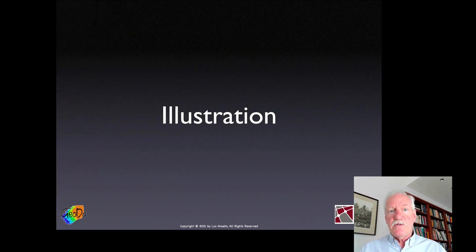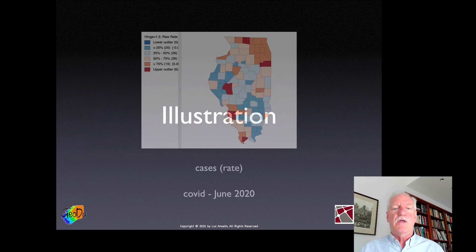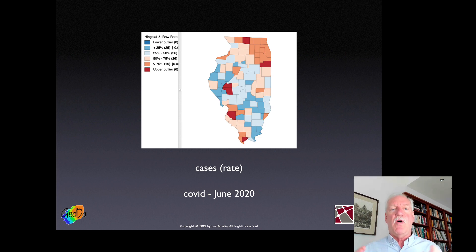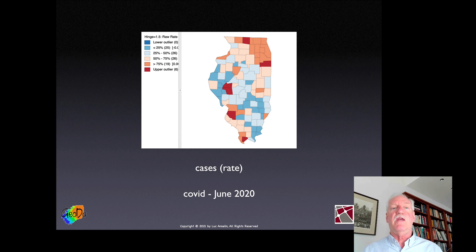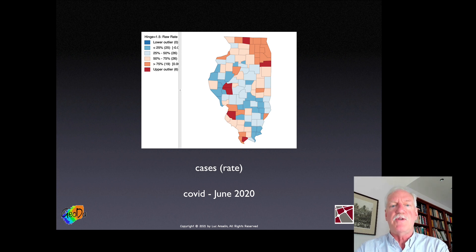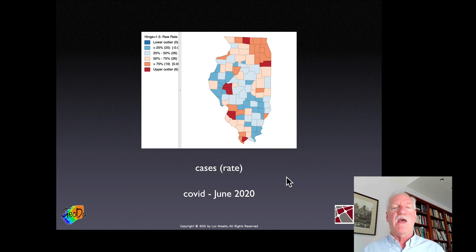Does this make a difference? It depends. In some applications it makes no difference at all — especially if all aerial units have roughly the same population, where variance instability is not a big issue. In other instances, especially where large populations are mixed with much smaller ones, it can matter. The state of Illinois is a perfect example: some counties in the Chicago metro area have very large populations, while counties in the south have much smaller ones.